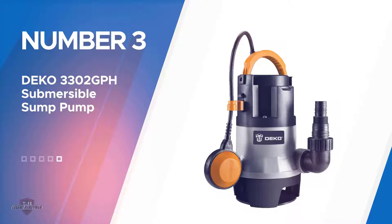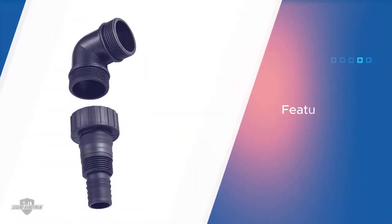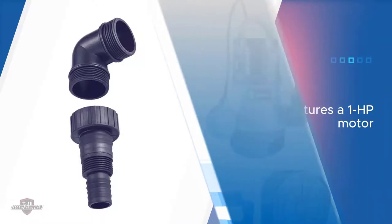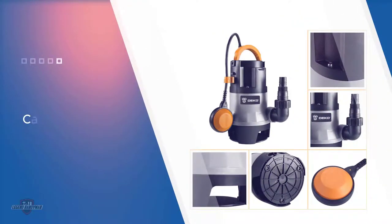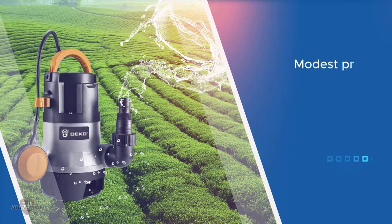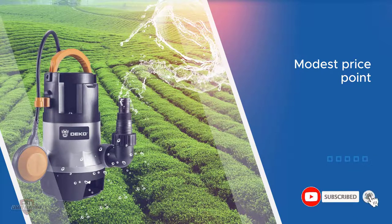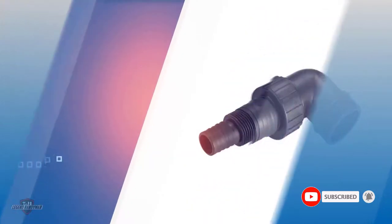Number three: Deko 3302 GPH submersible sump pump. This pump from Deko features a 1 HP motor capable of pumping 3,302 GPH. It manages to accomplish this at a modest price point. Unfortunately, this low price is reflected in the build quality. All plastic housing and components don't inspire confidence in this pump's longevity, nor does the lack of any available warranty information.